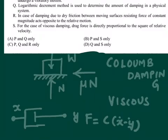Now let's talk about the third statement. The third statement says: in case of damping due to dry friction between moving surfaces, resisting force of constant magnitude acts opposite to the relative motion. So the statement conveys two things: the first thing is that the resisting force is of constant magnitude, and the second thing is that it always acts opposite to relative motion.